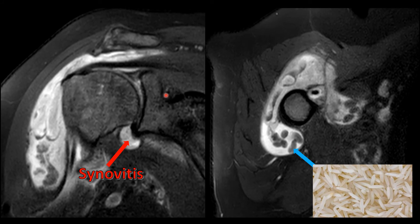Rice bodies are classically described with rheumatoid arthritis but can be seen with tuberculosis arthritis, other infectious arthritis, and juvenile arthritis. The differential diagnosis is synovial chondromatosis, but keep in mind that rice bodies are classically described as a sequela from inflammation of the synovium, whereas synovial chondromatosis is a metaplastic condition — so they're different, though they look very similar surgically. Always remember: rheumatoid arthritis, tuberculosis arthritis, and the differential would include synovial chondromatosis.